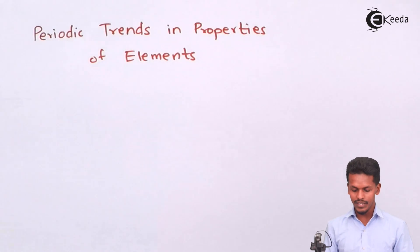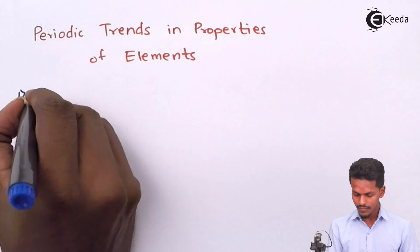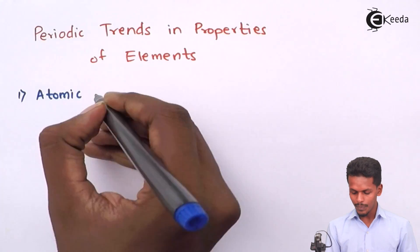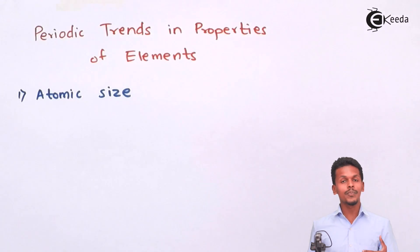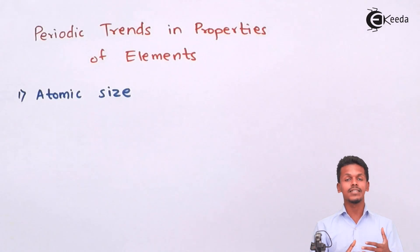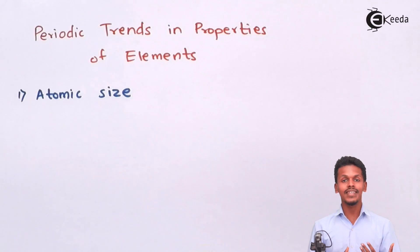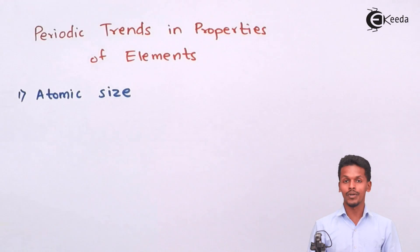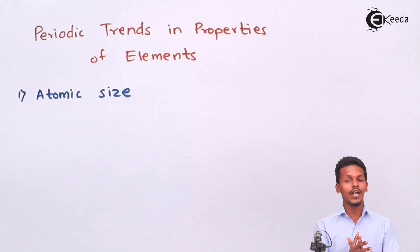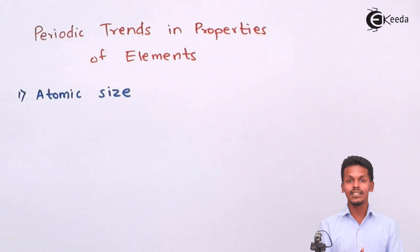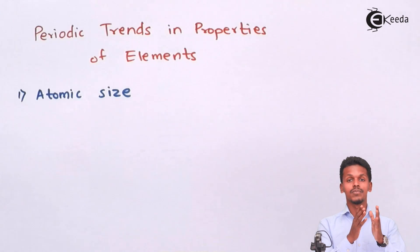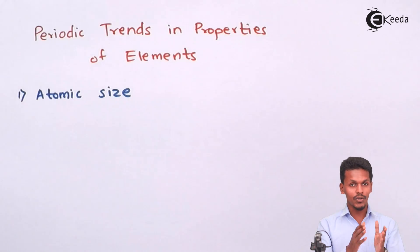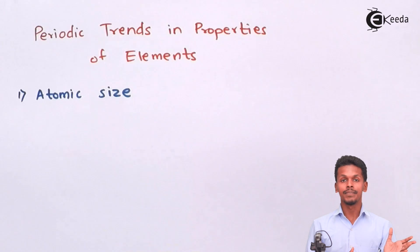The first property is atomic size. Atomic size is defined as the distance between the nucleus and the outermost valence shell containing an electron. This property of an element also changes according to the trend when we move within a particular group or through a particular period.